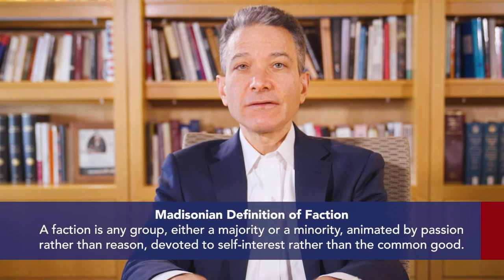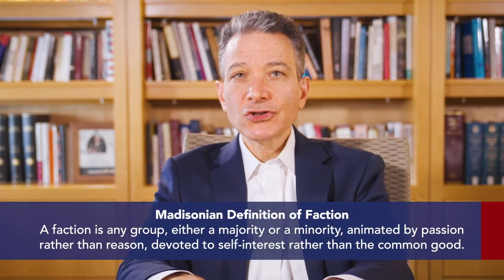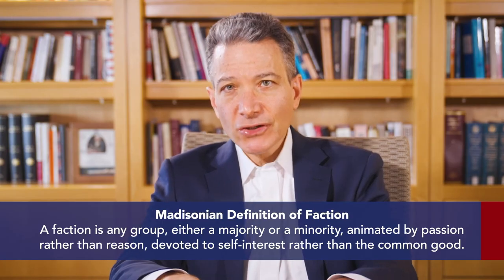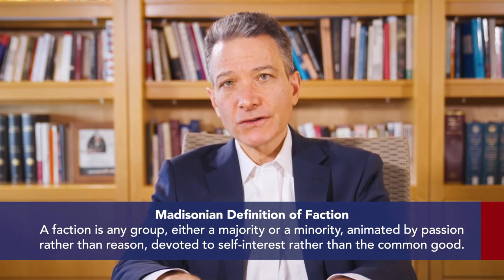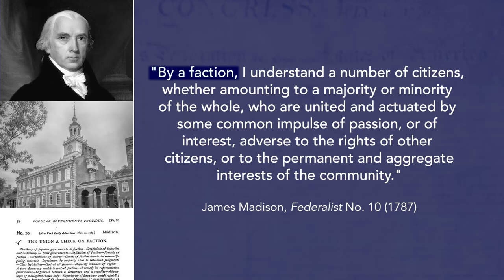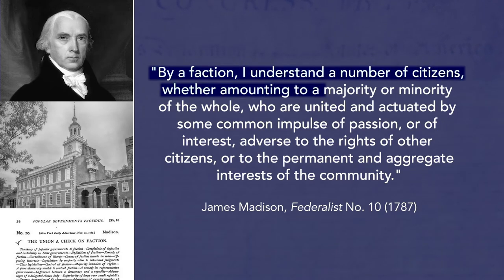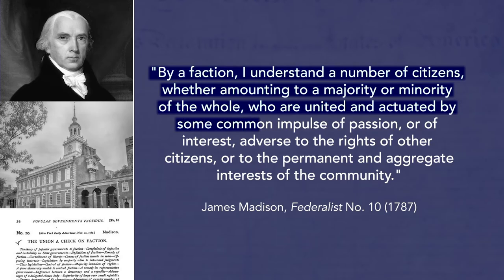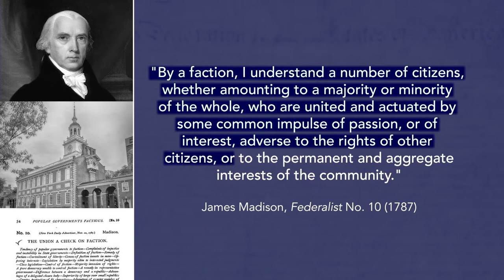Madison defines the central evil that a constitution is supposed to avoid as faction. In Federalist 10, he defines a faction as any group — either a majority or a minority — animated by passion rather than reason, devoted to self-interest rather than the common good. Here is Madison's definition: 'By faction I understand a number of citizens, whether amounting to a majority or a minority of the whole, who are united and actuated by some common impulse of passion or of interest, adverse to the rights of other citizens or to the permanent and aggregate interests of the community.'